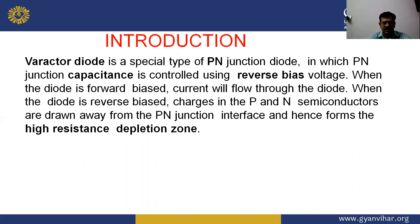When the diode is reverse biased, charges in the P and N semiconductors are drawn away from the P-N junction, forming a high-resistance depletion zone. In this depletion region, there is no flow of charge carriers across the junction.